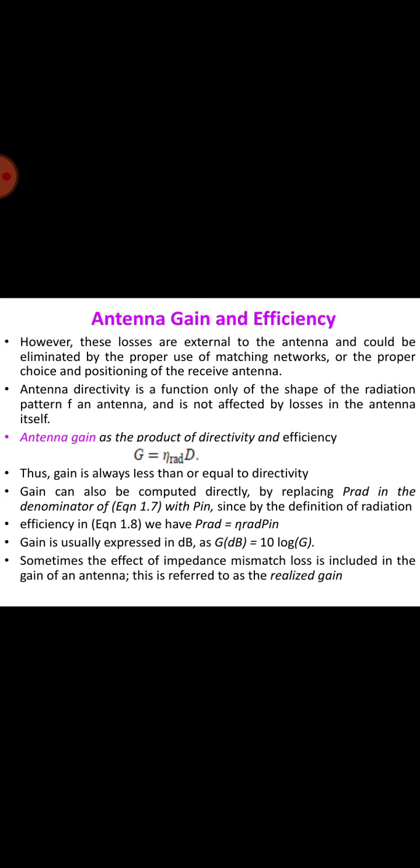The gain of an antenna is an actual realized quantity which is less than directivity due to ohmic losses in the antenna or its radome if it is enclosed. In transmitting, these losses involve power fed to the antenna which is not radiated but heats the antenna structure. A mismatch in feeding the antenna can also reduce the gain. The ratio of the gain to the directivity is the antenna efficiency factor. G equals K into D, where K is the efficiency factor. It is also dimensionless. The value of K lies between 0 and 1.